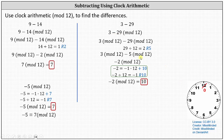Modeling 3 minus 29 on the clock, we start with the hour hand pointing at 3 for 3 o'clock, then go back 29 hours — that's 2 complete rotations counterclockwise and then 5 more hours counterclockwise. Starting at 3 o'clock, we go back 12 hours, back 24 hours, then 25, 26, 27, 28, 29 hours, and we can see it's 10 o'clock, giving us negative 2 mod 12 equals 10.